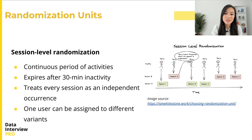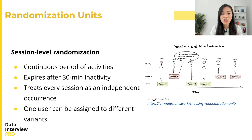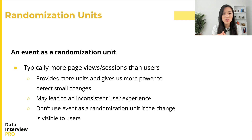Session-level randomization can also be used. A session is typically defined as a continuous period of activity — for instance, logging on to Facebook, browsing, then closing your browser, with the session expiring after 30 minutes of inactivity. The next day when you log on again, that's a new session. Session-level randomization treats every session as an independent occurrence, so one user can be assigned to different variants over time. Because there are typically more page views and sessions than users, using an event as a randomization unit provides more units and greater statistical power to detect smaller changes — however, it may lead to inconsistent user experience.